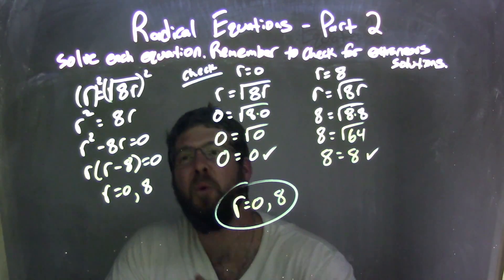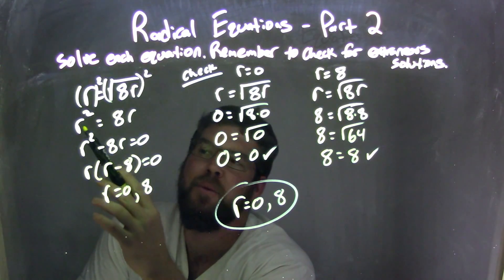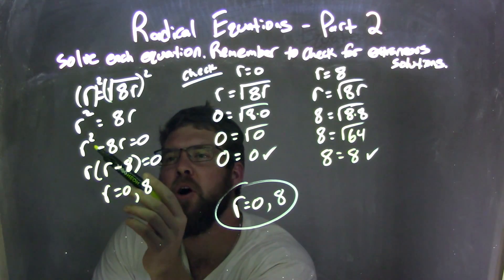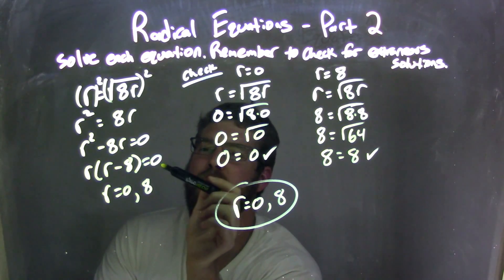So let's recap like we always do. r equals the square root of 8r. We square both sides to eliminate the square root, leaving me with r squared equals 8r. I subtract 8r from both sides, leaving me r squared minus 8r equals 0. I factor that by pulling out an r, giving me r times r minus 8 equals 0.